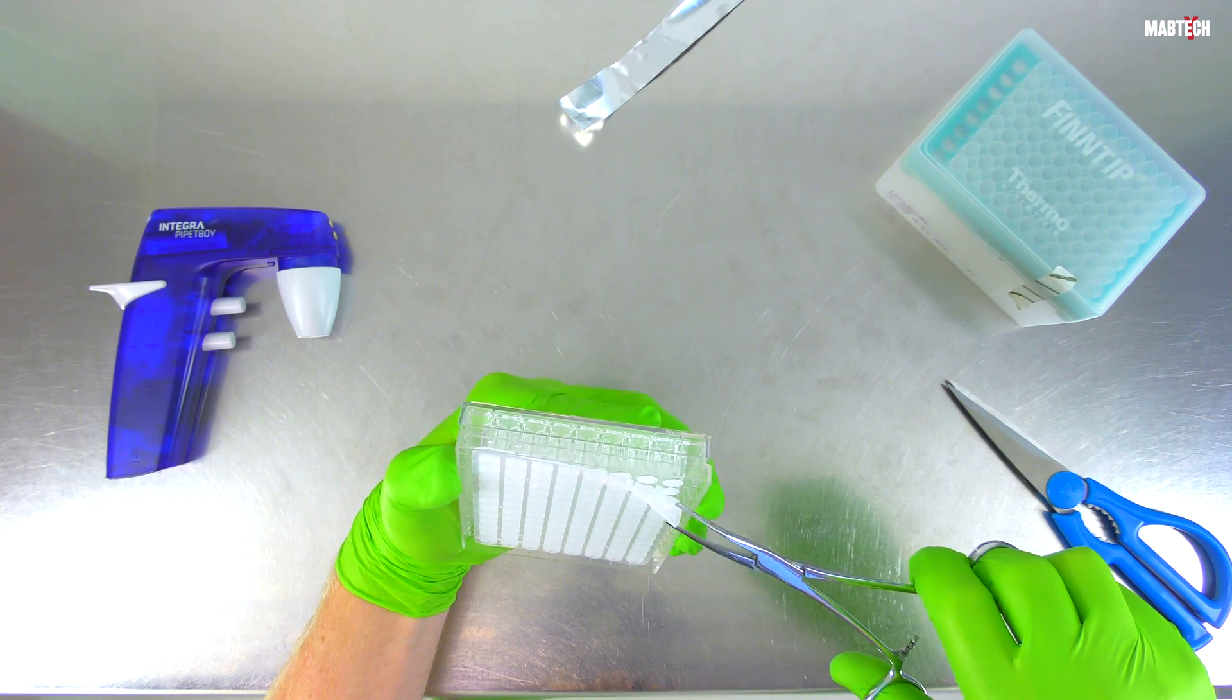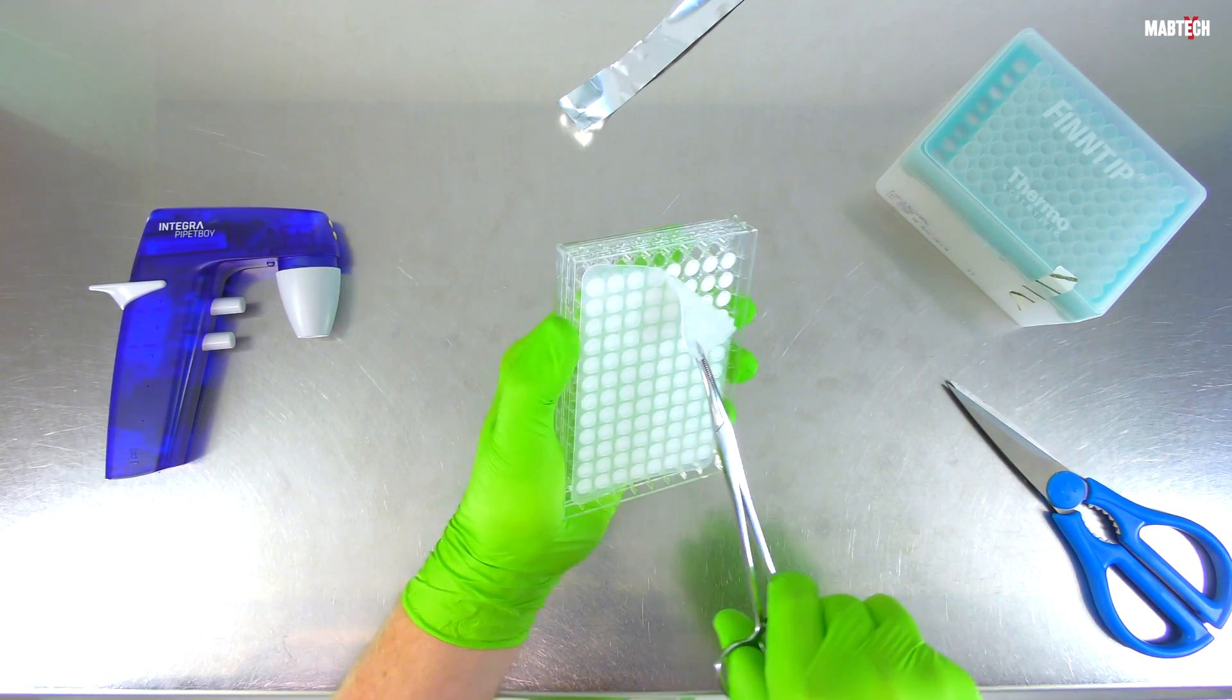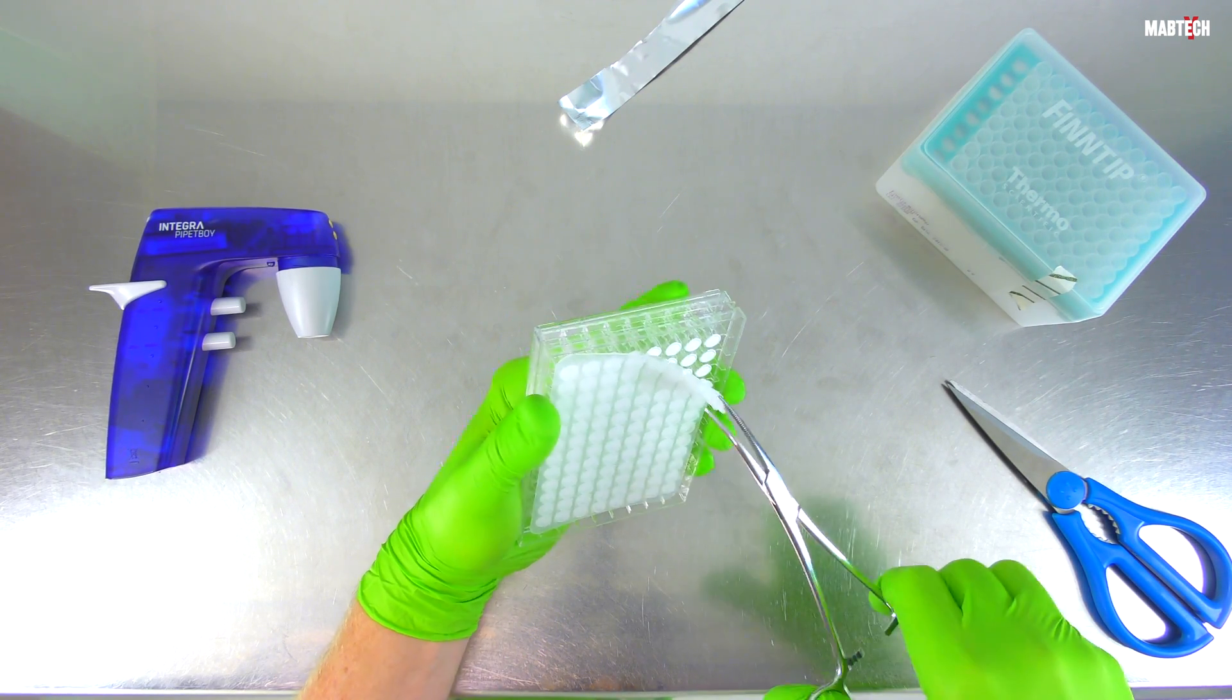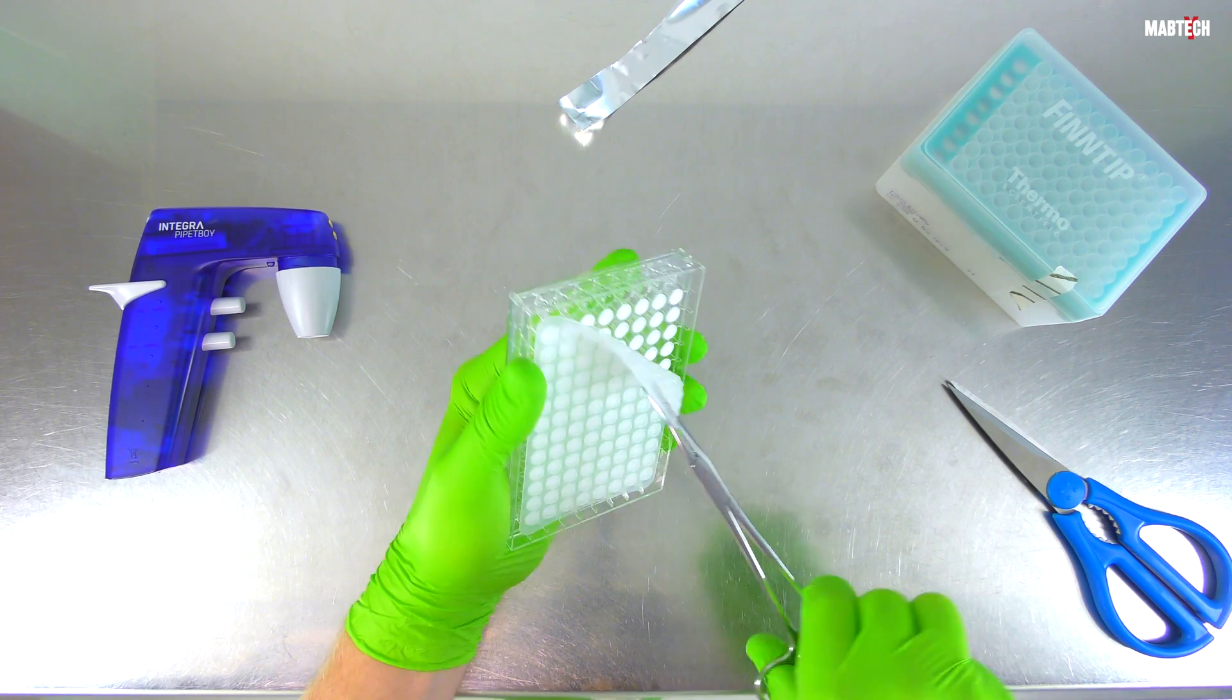This is very important because simply pulling straight and hard can make the ELIspot membrane rupture. We don't want that. Furthermore, notice how the technician is holding the plate, not putting any pressure on the backside of the underdrain.